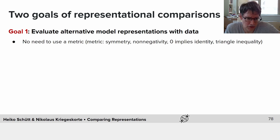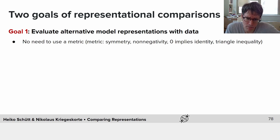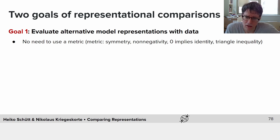In this context, there is no need to use a metric. A metric requires symmetry and non-negativity. It requires that it be zero only if the two vectors or representations ought to be considered identical, and it requires the triangle inequality to hold.